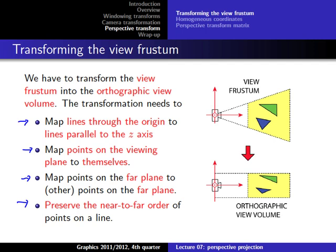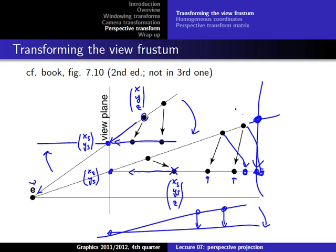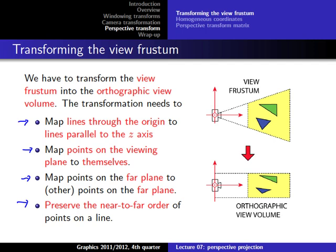For points in between, we have to preserve the near-to-far order — this makes sense because if we switched that, we would draw the wrong object in front. Now the obvious question is: why preserve the order rather than just keep the same Z-axis? The answer is that as long as the order is preserved we get the very same image. The advantage of not preserving the Z-axis exactly is that we can do it with matrix multiplication; if we were to preserve the Z-axis directly, we cannot do it as easily with matrix multiplication.